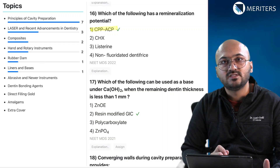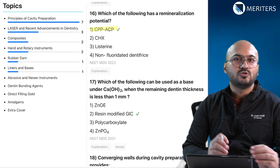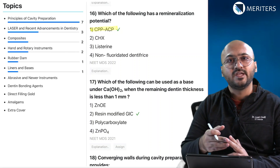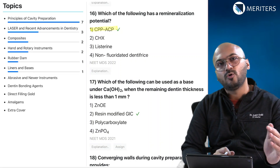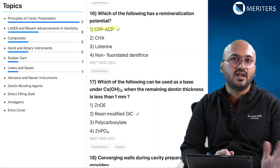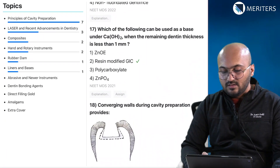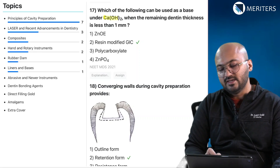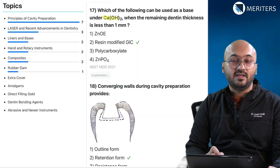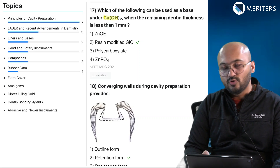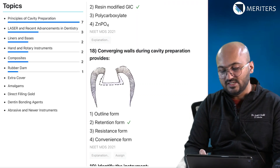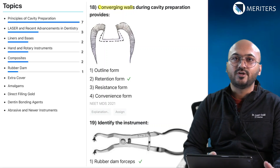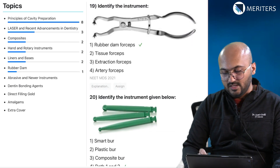Which of the following has a remineralization potential? That's CPP — casein phosphopeptide. Go through the key concept. Whenever you are going through an explanation and key concept, make sure you take down suitable notes in your workbook — note important points, new things, and difficult things — so you have them handy for revision. Which of the following can be used as a base under calcium hydroxide when remaining dentine thickness is less than 1 mm? That's a good clinical case-based question on liners — you'll use resin modified GIC.